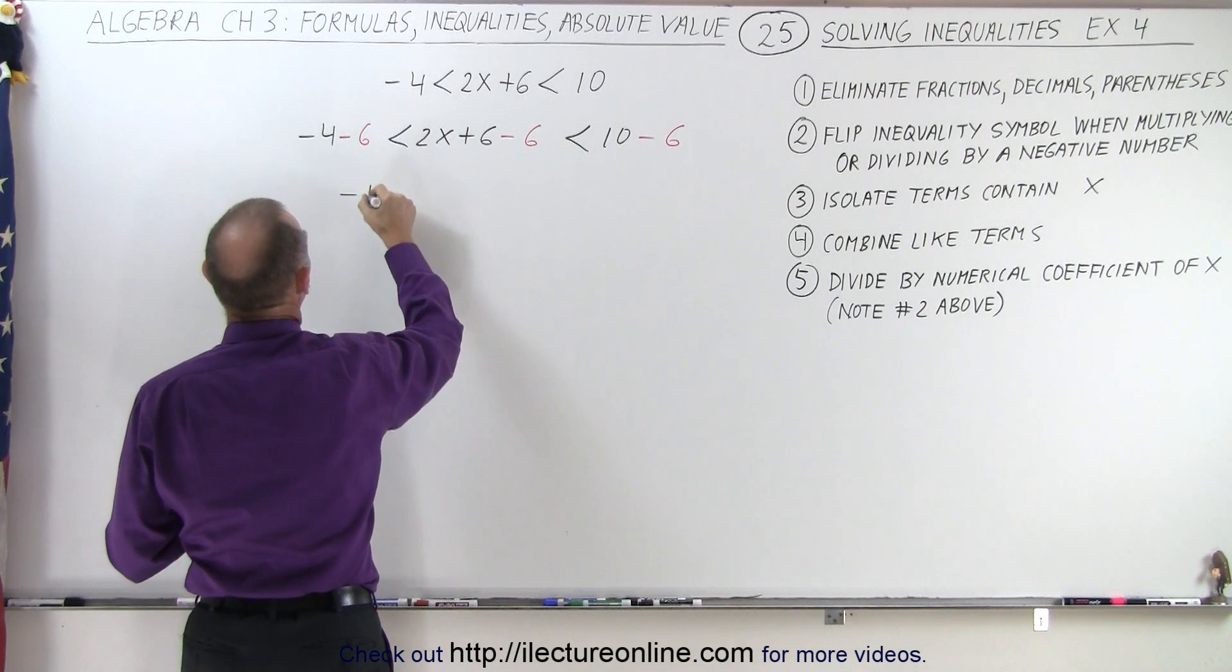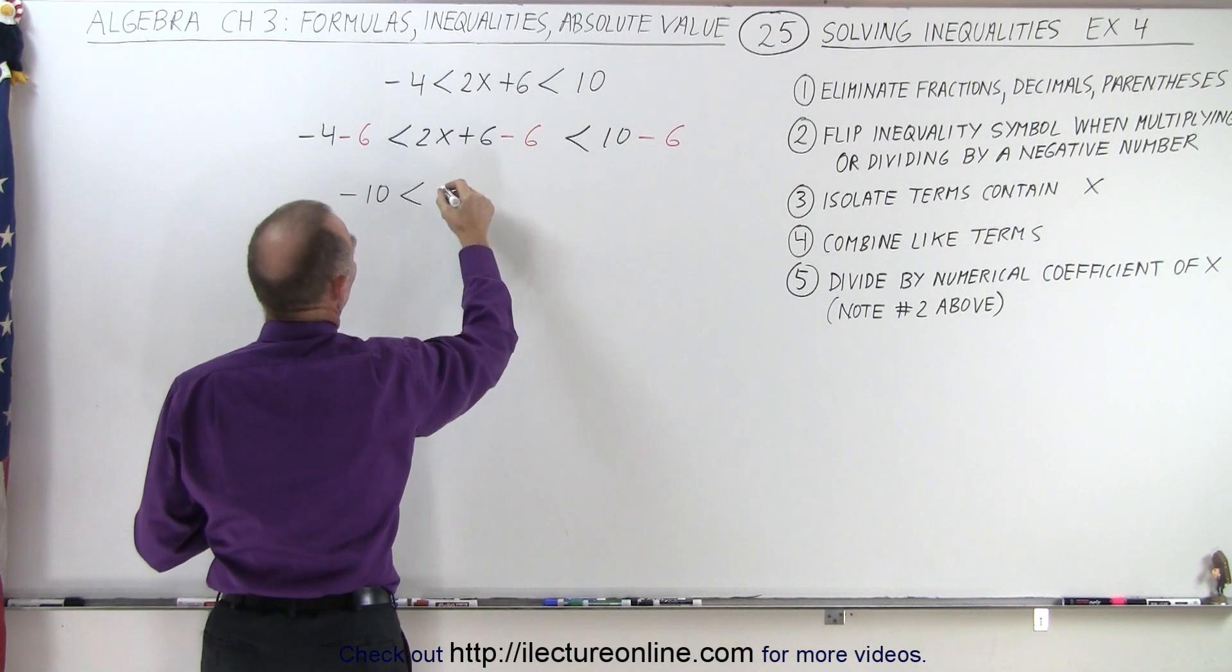Now we can simplify this as follows: negative 4 and negative 6, that's minus 10, is less than, the 6's cancel out, 2x, which is less than 4.